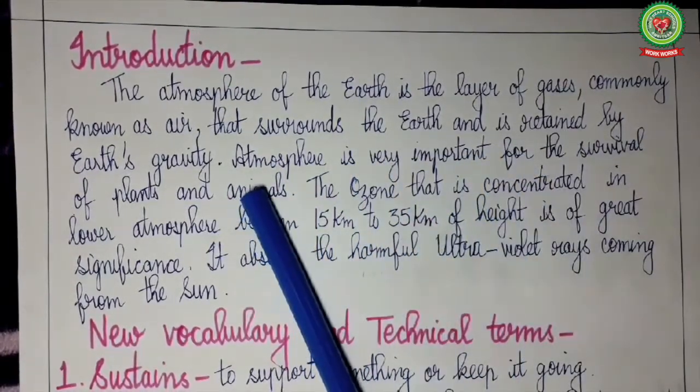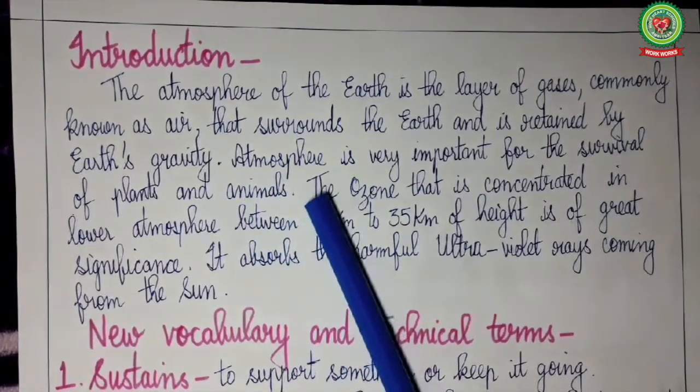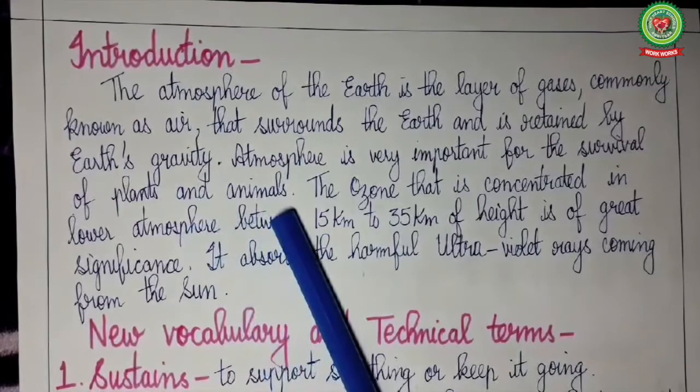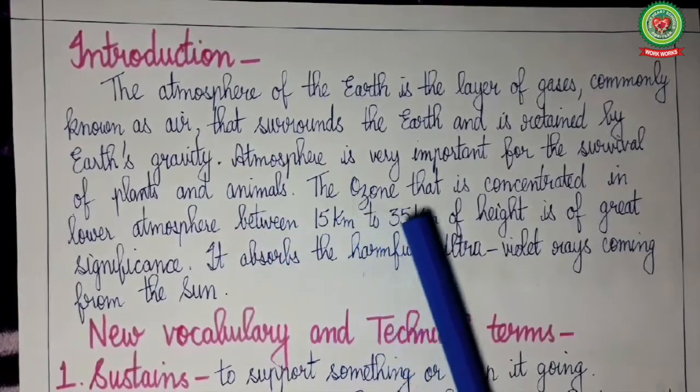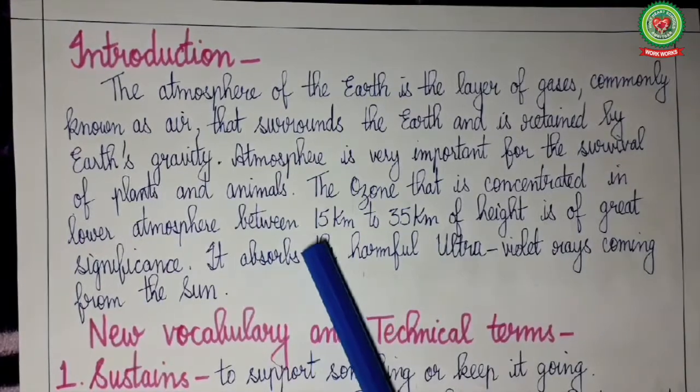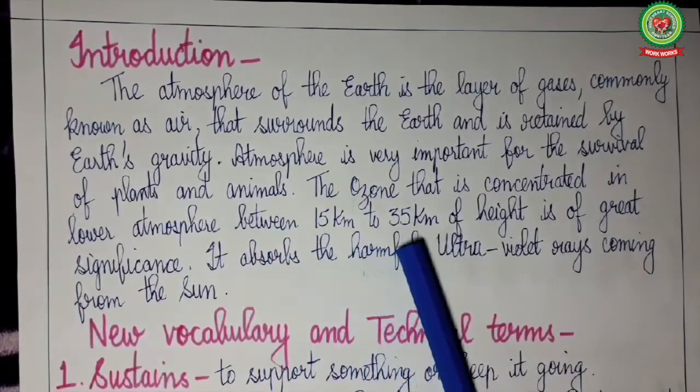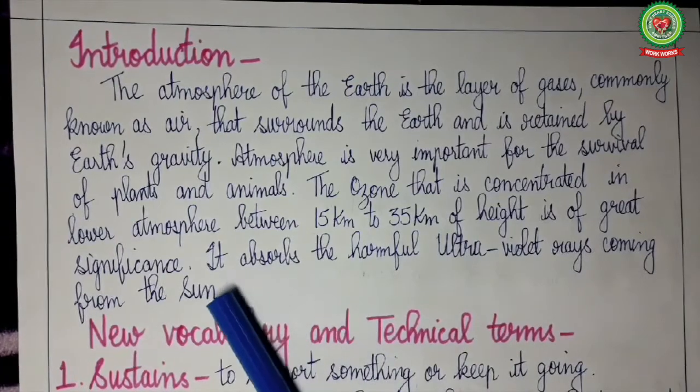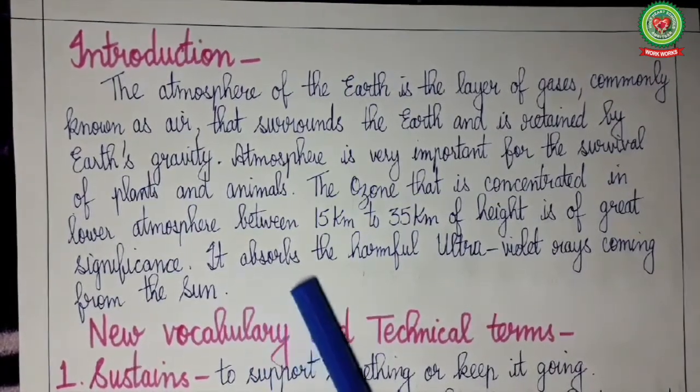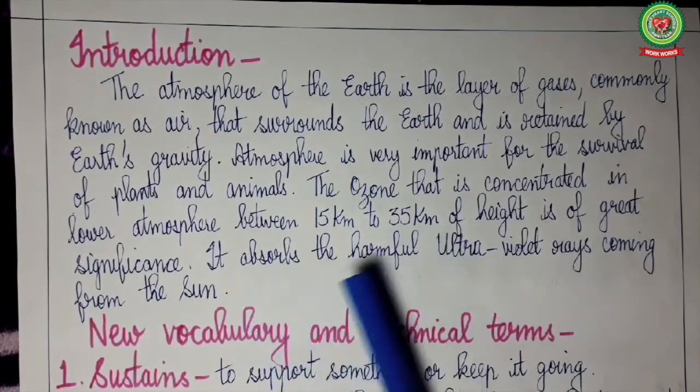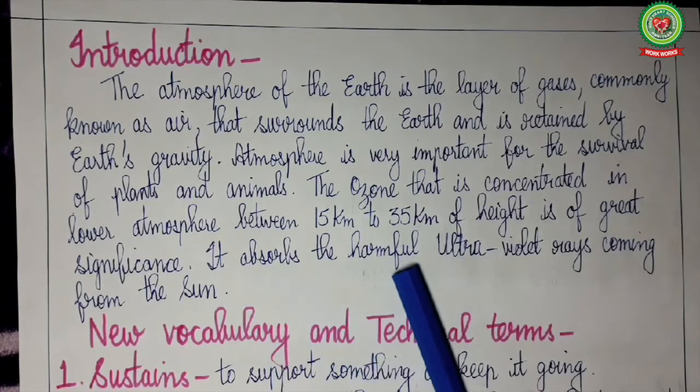The atmosphere is very important for the survival of both plants and animals. The ozone is concentrated in the lower atmosphere between the height of 15 km to 35 km. It is of great significance for us. It absorbs the harmful ultraviolet rays coming from the sun. Today we will discuss about the ozone layer in detail.